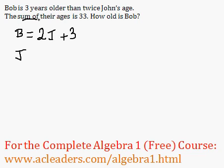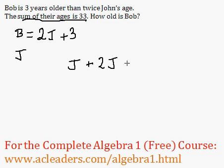And we know that the sum of their ages is 33. So J, which is John's age, added to Bob's, which is 2J plus 3, is going to be 33.